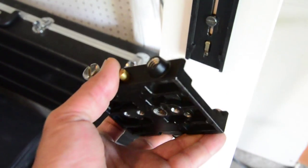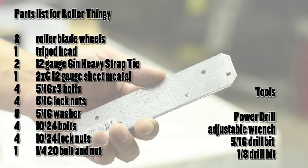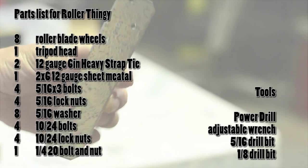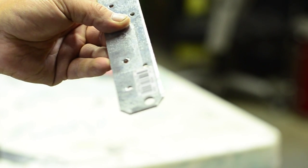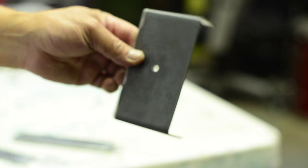Here's my quick release plate just in case I want to put it on a tripod or something. Now, here's the parts list for the roller assembly. I took this tie strap and drilled the furthest holes out to 5/16. This is a plate of metal that I bent to match the length of the EMT pipes.